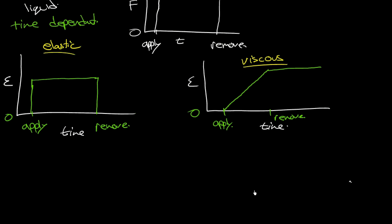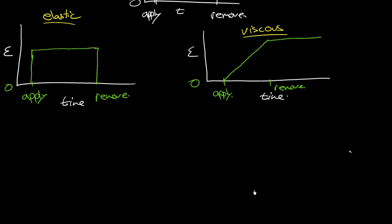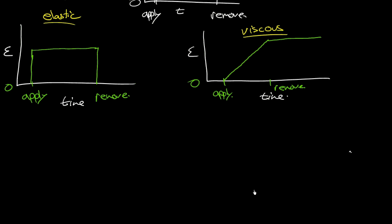Now the question then is, what would it look like? What would this strain versus time curve look like for a viscoelastic material? And that's the case for all polymers, really. I mean, so different polymers can be more viscous or more elastic, but they will all be, to some extent, viscoelastic.